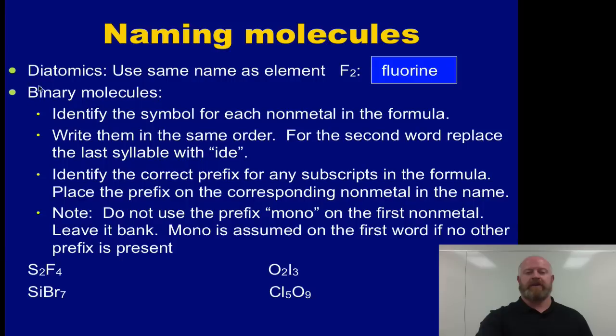When you have a binary molecule, binary meaning two, we have four examples down here. SF4, SiBr7, OI3, ClO9 where you have two different nonmetals put together. We need to go through and name those different nonmetals now. First step, identify the symbol and then write them in the same order as they come in the formula. So for S2F4 we start with sulfur so we write sulfur first and then we have fluorine so then we write fluorine. The difference is though for the second word, on our second word, we replace the last syllable with ide. Then find the right prefix for the subscripts. Place the prefix in the name and you're done.